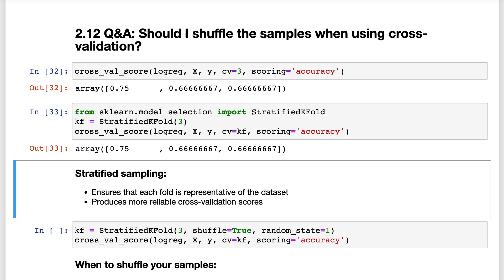In most cases, it doesn't matter whether you shuffle the samples before splitting. However, if the order of the samples in your dataset is not arbitrary, then it's important to randomly shuffle the samples when cross-validating.